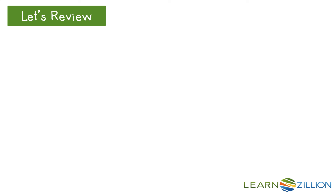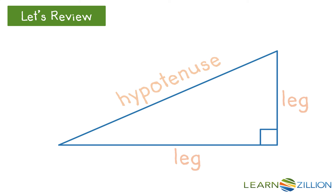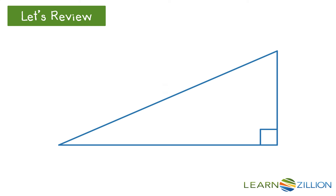Let's review this. For any right triangle, the length of the legs and the hypotenuse have a special relationship described by the Pythagorean theorem. If the lengths of the legs are a and b and the length of the hypotenuse is c, then a squared plus b squared equals c squared.